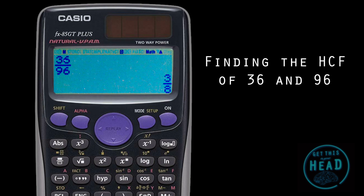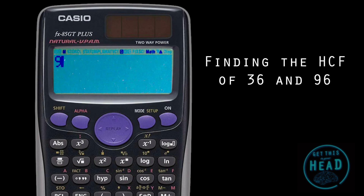So 36 divided by something gives me 3, and 96 divided by that same something gives me 8. I can work that out by dividing 36 by 3, which gives me 12 — and 96 divided by 8 also gives me 12. So 12 is the highest common factor of 36 and 96.